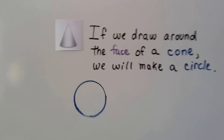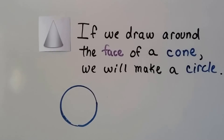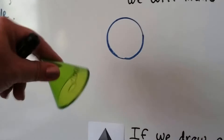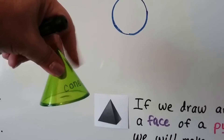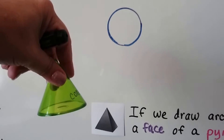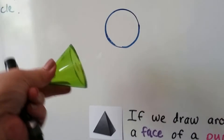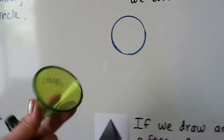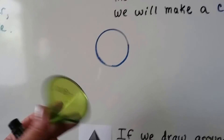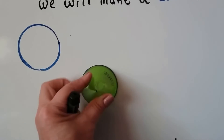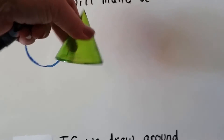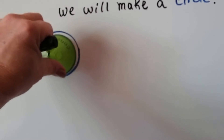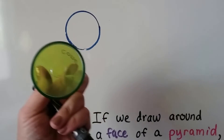If we draw around the face of a cone, we'll make a circle. I took my cone — this curved part is not a face because if I laid it down on that part, it would roll. So that's not a face. A face is a flat surface. The flat surface of the cone is the bottom part, and I can trace around it and make a circle, because it is a circle.